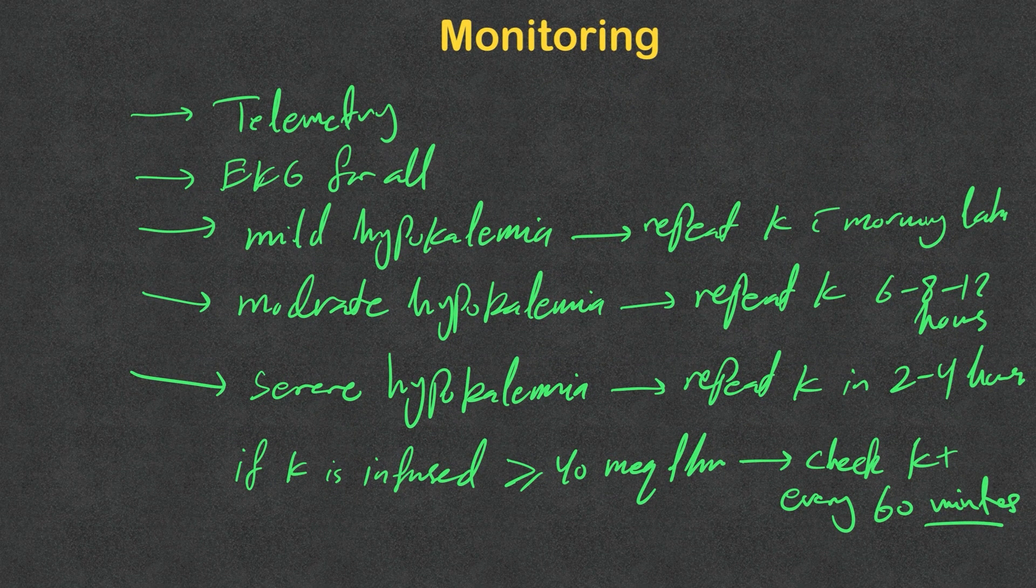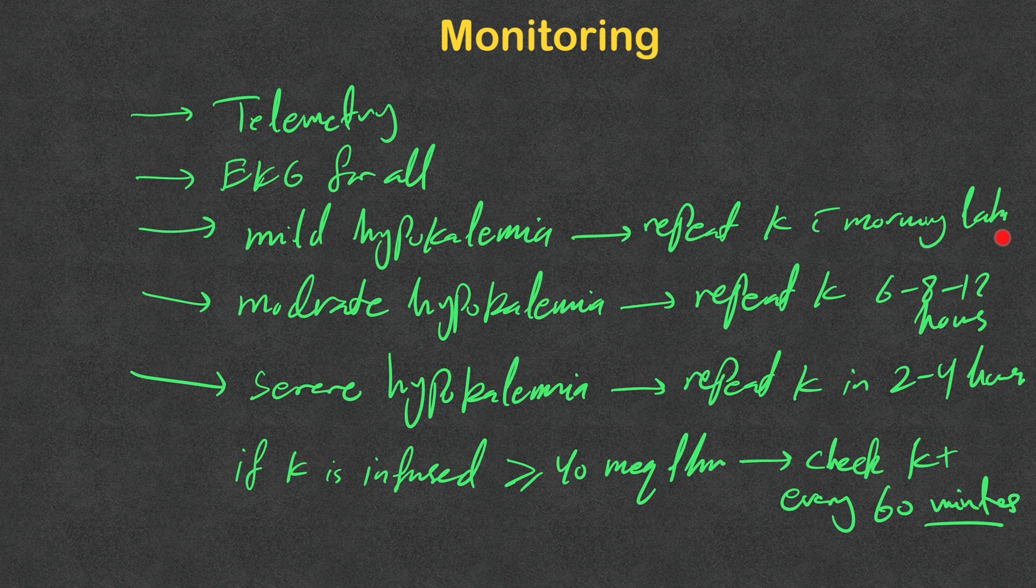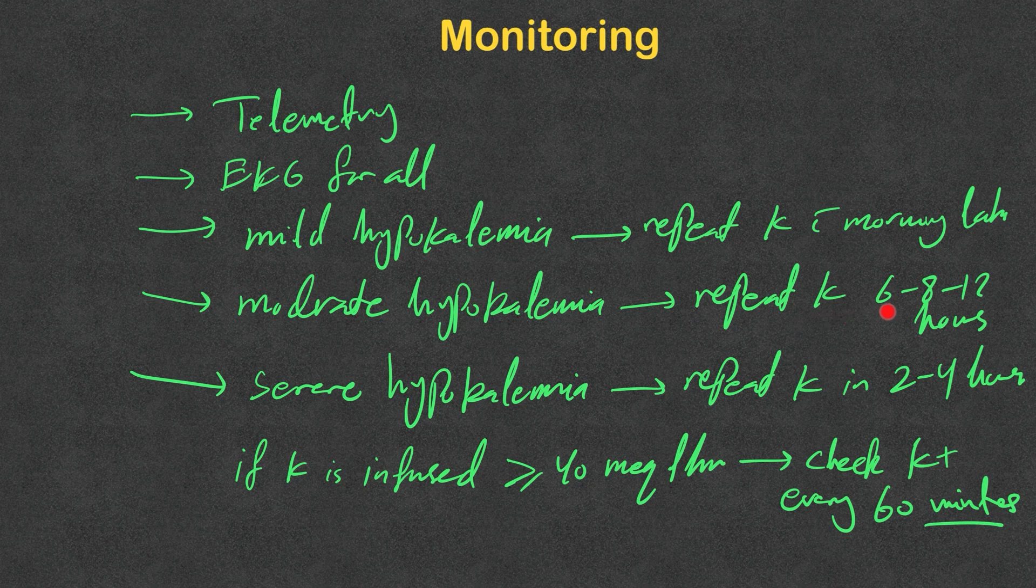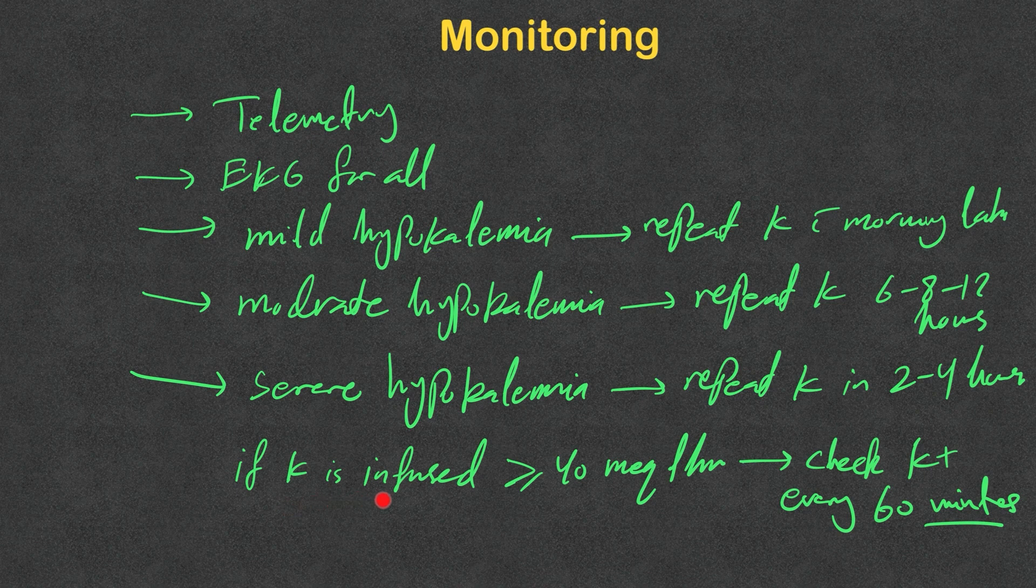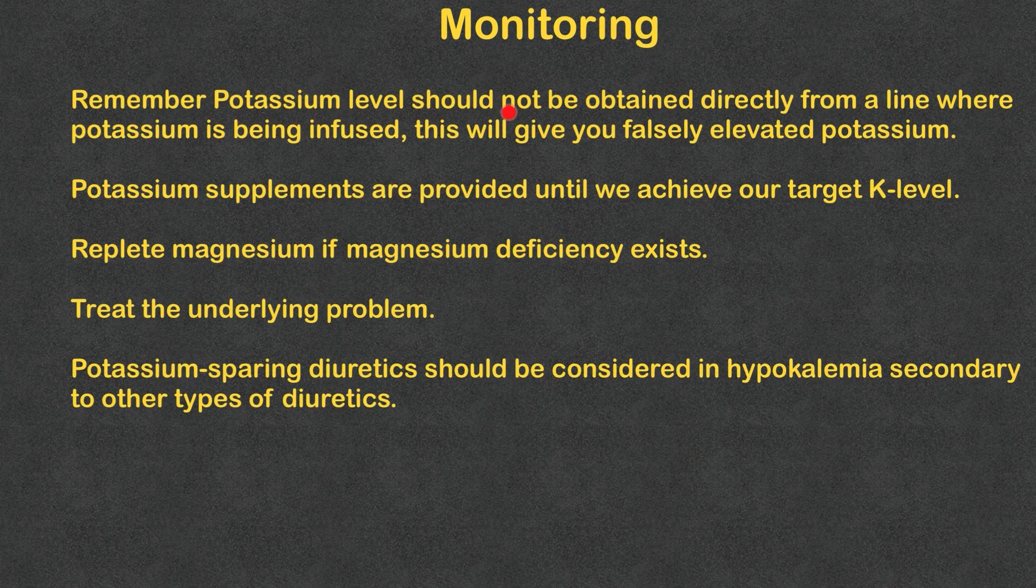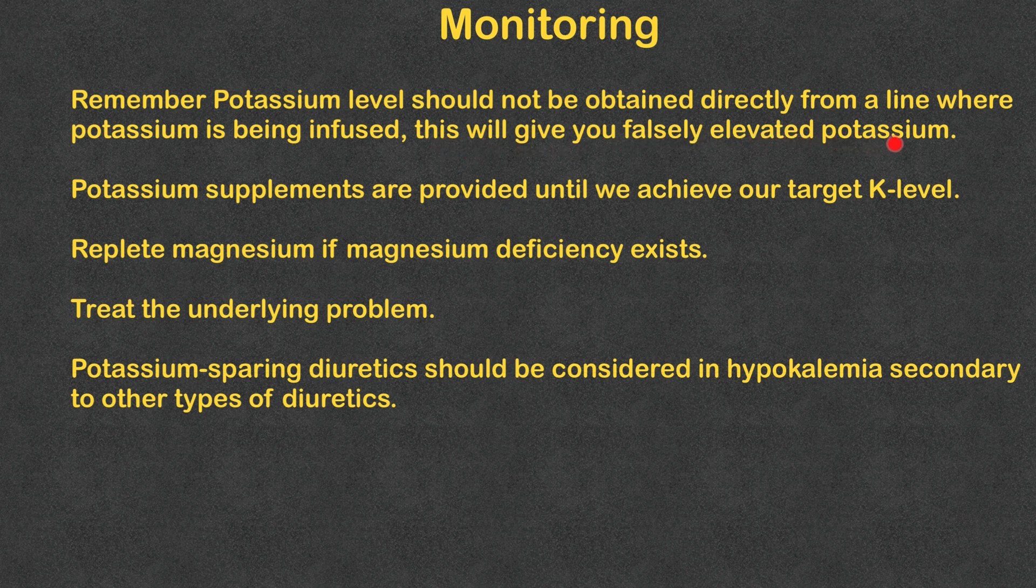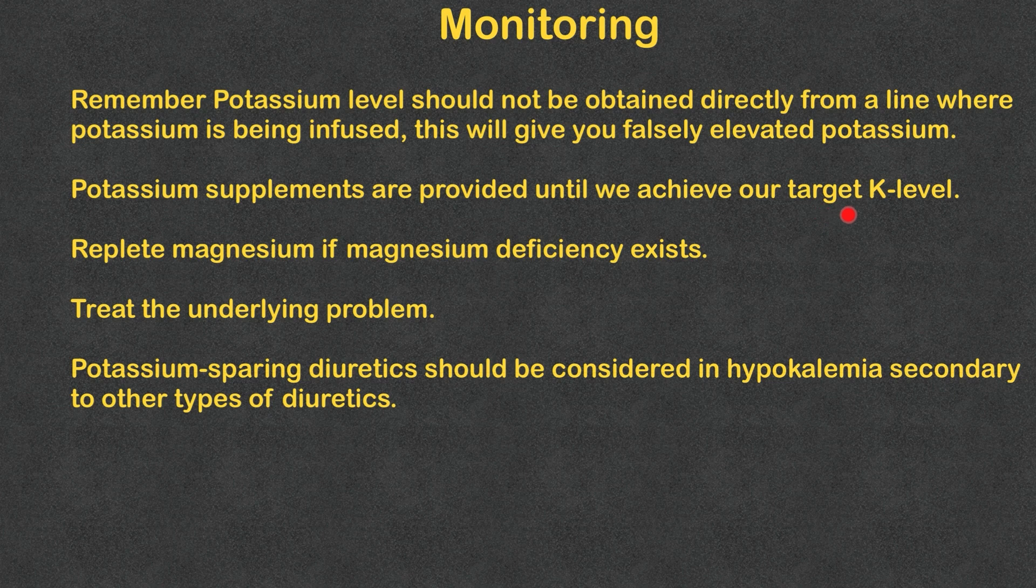Now we gave potassium. How to monitor that? Remember, all of them should be on telemetry, 12-lead EKG for all. For mild hypokalemia, we can repeat potassium with next morning labs, there is no need to repeat it the same day. Moderate hypokalemia, depends how low it is, we repeat it every 6 to 8 to 12 hours. Severe hypokalemia, repeat in 2 to 4 hours. If the potassium is infused at a rate of 40 milliequivalents per hour or more, check potassium every 60 minutes. We finish monitoring by remembering that potassium level should not be obtained directly from a line where potassium is being infused, whether a PICC line, peripheral line, or central line. This will give you falsely varied potassium.